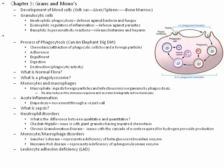Know the development of blood cells: yolk sac to the liver and spleen, then the bone marrow. Know the difference between the granulocytic cells. Neutrophils are capable of phagocytosis — they defend against bacteria and fungus. Eosinophils regulate inflammation and are also a defense against parasites, so you may see eosinophils increase with allergic reactions or parasitic infections. Basophils are involved in hypersensitivity-type reactions, also have IgE involved, and release histamine and heparin causing itchiness and sneezing.